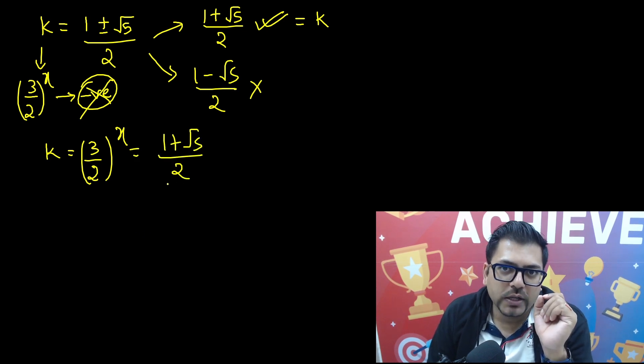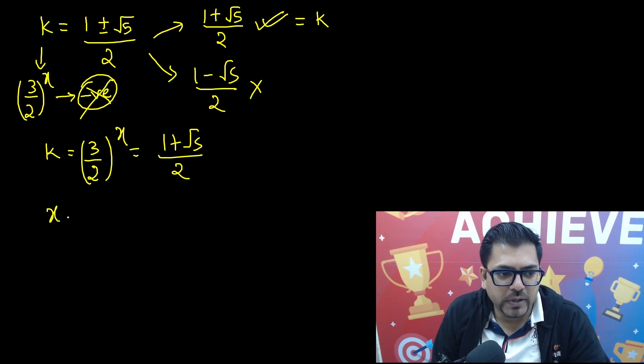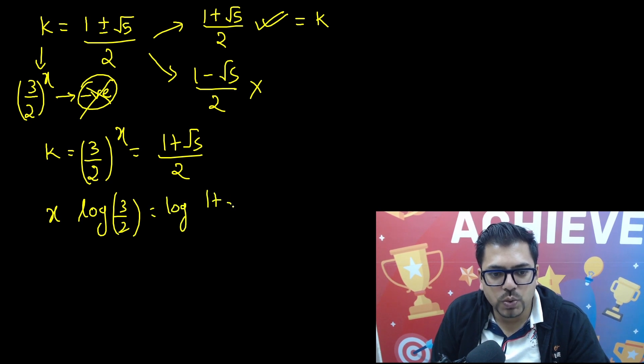Now finally what you will do, you will take logarithm both sides. So logarithm both sides will become x log of 3 by 2 equals to log of 1 plus root 5 whole divided by 2. So finally what will happen, this will go to the denominator.